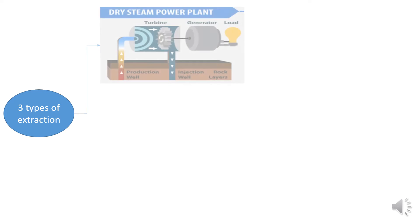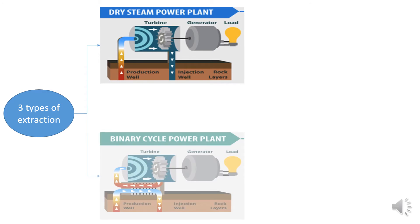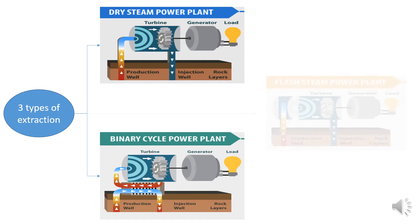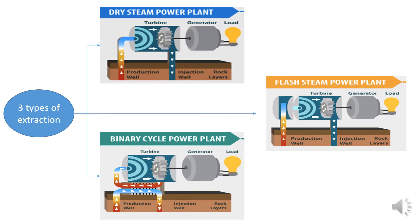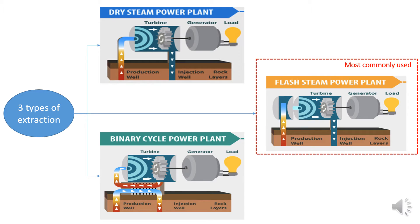There are three geothermal plant extraction methods: dry steam power plants, binary cycle power plants, and flash steam power plants, being the most utilized. There are two types of plants — the conventional power plants with joint wells, and wellhead power plants, where only one extraction well is joined, which is what we are comparing.